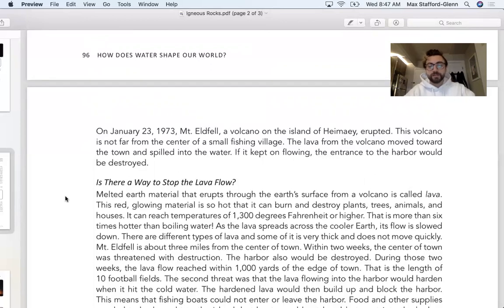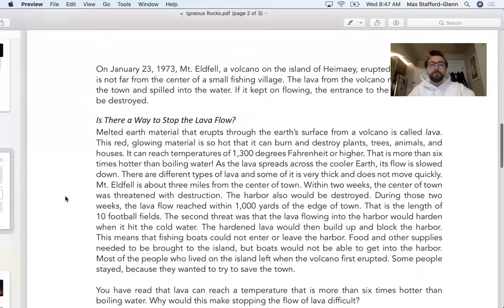Is there a way to stop the lava flow? Melted earth material that erupts through the earth's surface from a volcano is called lava. This red glowing material is so hot that it can burn and destroy plants, trees, animals, and houses. It can reach temperatures of 1,300 degrees Fahrenheit or higher. Water that is more than six times hotter than boiling water.